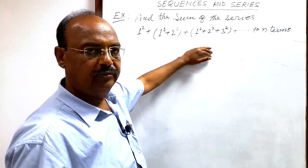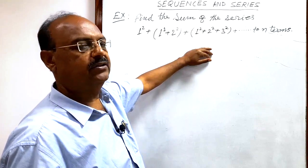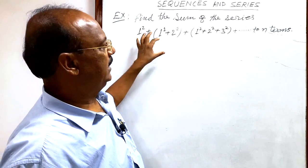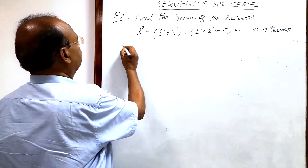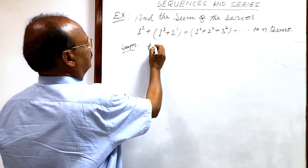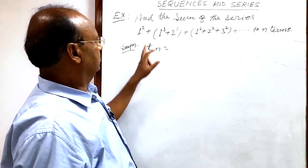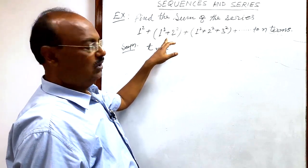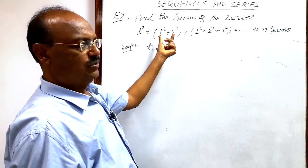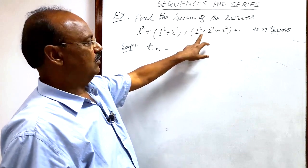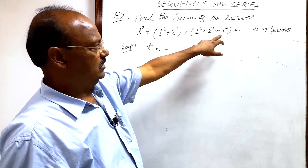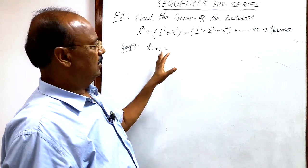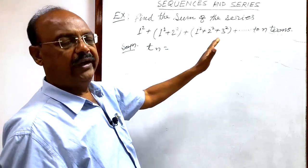For solving this question, first of all we will try to find out the nth term tn, and that we can get by observing the pattern of this series. The first term starts from 1², the second term has 1² and 2², and the third term has 1², 2², 3² — three terms. Naturally, when we look at this pattern, tn will also start from 1² and the total number of terms will be n terms.